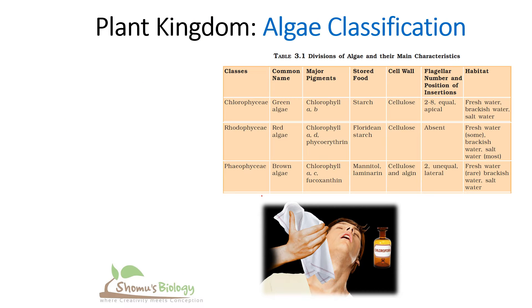Let's begin with algae classification. If you recall your NCERT book, there is table 3.1 which lists the classes: Chlorophyceae, Rhodophyceae, and Phaeophyceae — green, red, and brown respectively. Now, chlorophyll a and b give green color, chlorophyll d adds red color, and chlorophyll c gives a brown appearance.